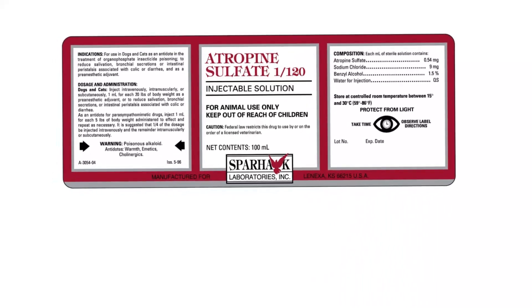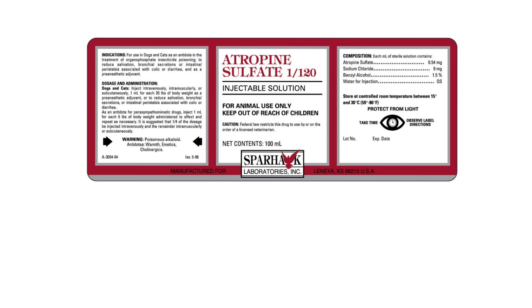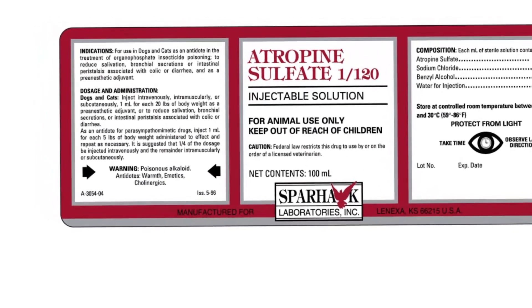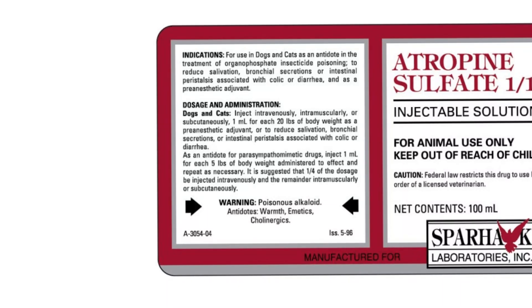Now I want to look at the label that comes on an atropine bottle. Indications — whenever you read these things from chemicals or drugs, indications means what it's used for. In dogs and cats it can be used as an antidote. An antidote is an agent that counteracts a poison — in this case it counteracts poisoning by insecticides, specifically organophosphate insecticides.